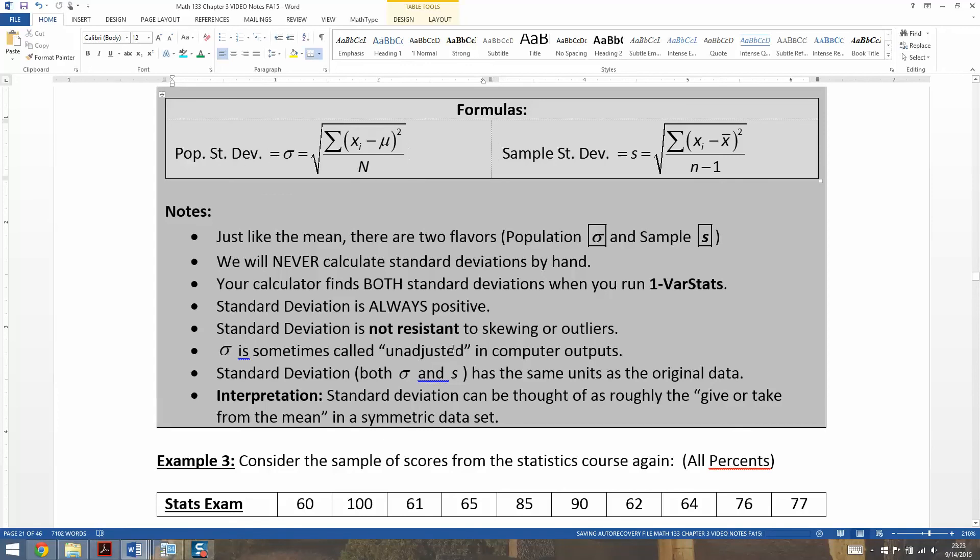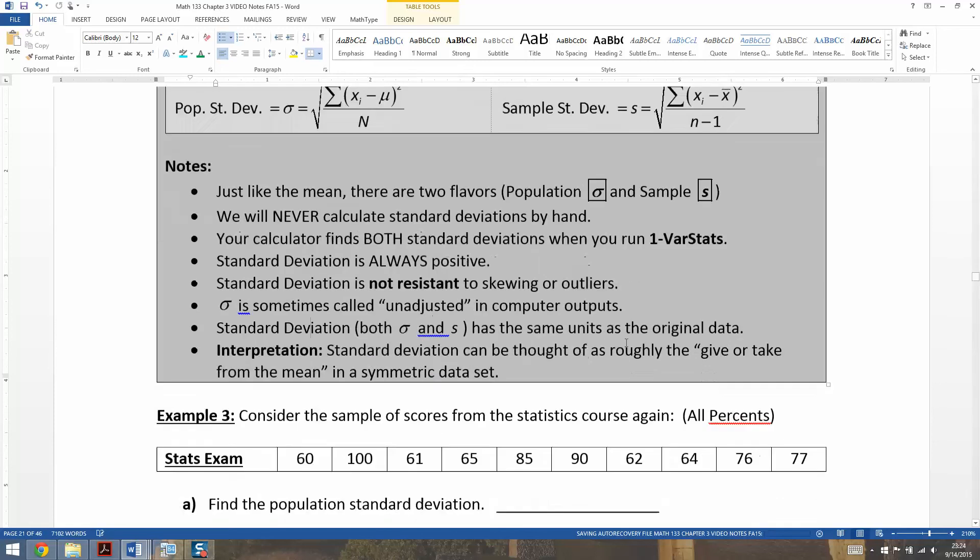So when you read a computer output, they'll call the one that's on the left unadjusted. Now, both of these have the same units as your original data set. So if your original data set is in dollars, then your standard deviation is dollars. If your original data set is inches, standard deviation is inches.